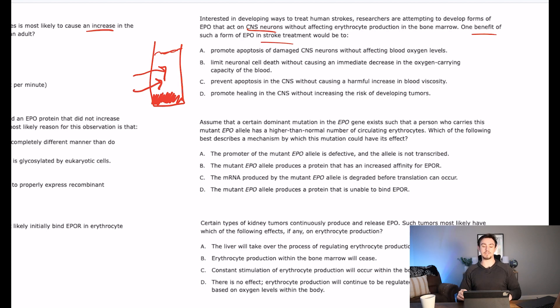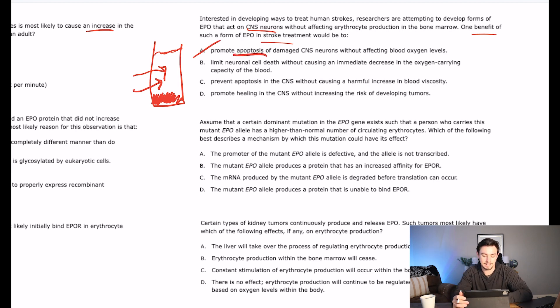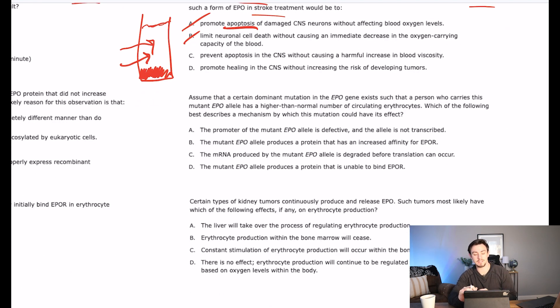So A says one benefit of this is that it would promote apoptosis of damaged CNS neurons. To know that this is like a really bad answer choice, you have to first understand that neurons don't really grow back. What you've got is kind of what you're going to have. So you would not want to apoptose them. So maybe not A. B says that we would limit neuron cell death without causing an immediate decrease in the oxygen carrying capacity of the blood. So the second half right here is implying that if we are to crank up the amount of red blood cells, then we are going to get a decrease in oxygen carrying capacity of the blood. But that's not necessarily the truth. If you have more red blood cells, more carriers, more UPS trucks, then you can deliver more packages, right? So you can actually carry more oxygen. So B is false for that reason.